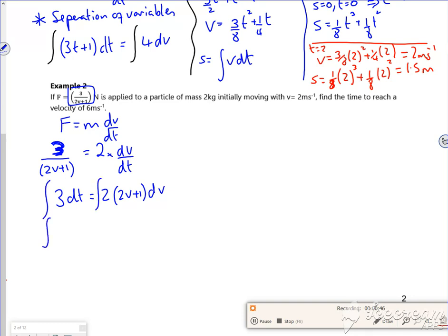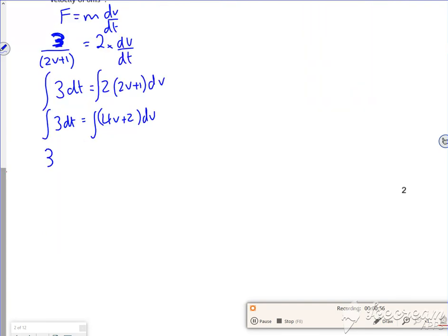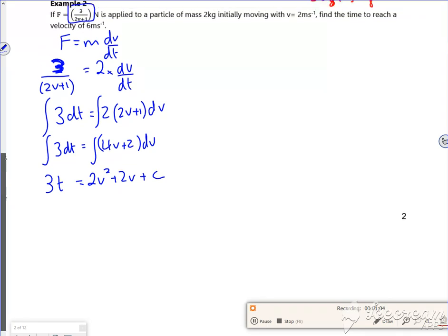So I've got an integral of 3 dt and an integral of 4v plus 2 dv. So if I integrate it, I've got 3t is equal to, that would be 4v squared over 2 plus 2v plus c.